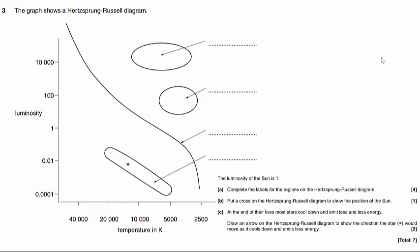Question number three presents us with the Hertzsprung-Russell diagram and instructs us to do several things to it. Firstly, we need to complete the labels for the regions on the Hertzsprung-Russell diagram. This is worth four marks.